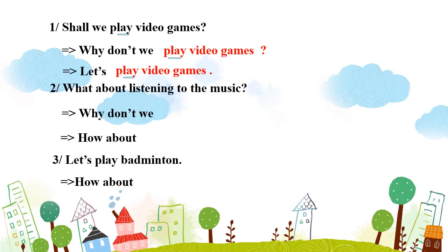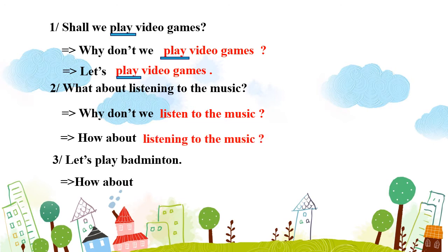Trong câu này chúng ta thấy: Say we → Why don't we play – động từ nguyên mẫu. Câu thứ 2: "What about listening to the music?" – Nghe nhạc thì sao? Viết lại: "Why don't we listen to the music?" – Sao chúng ta không nghe nhạc? Hoặc "How about listening to the music?" – Nghe nhạc nhé. Trong câu này: What about / How about đi với động từ -ing, Why don't we đi với động từ nguyên mẫu.